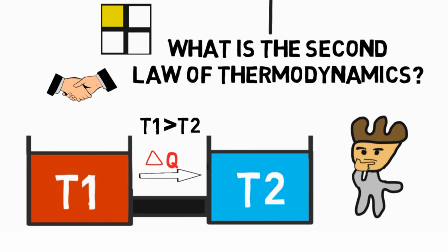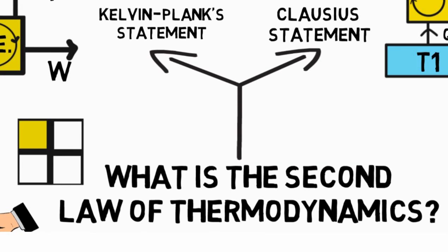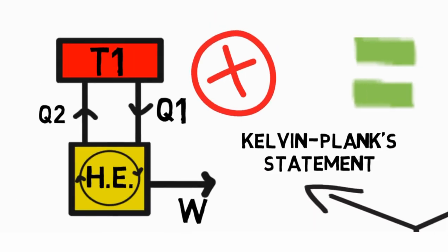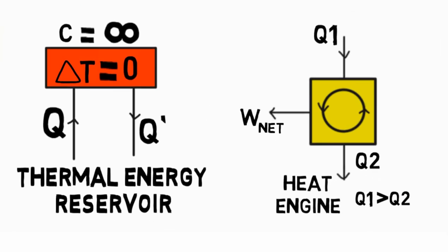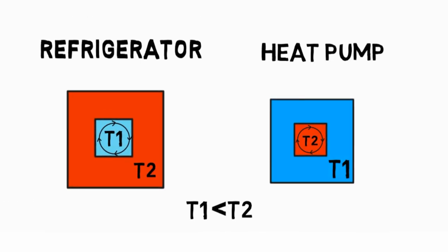We just saw that the second law of thermodynamics has two statements: the Kelvin-Planck and the Clausius statements. And we also defined some basic terms, namely a thermal energy reservoir, a heat engine, a refrigerator and heat pump.